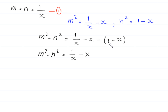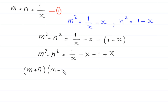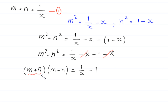Removing the bracket: the positive 1 becomes negative 1 and the negative x becomes positive x. Now m squared minus n squared equals (m plus n)(m minus n) equals 1 over x minus 1. The positive x and negative x cancel, leaving negative 1. In place of m plus n we substitute its value 1 over x from equation 1, giving (1 over x) times (m minus n) equals 1 over x minus 1.